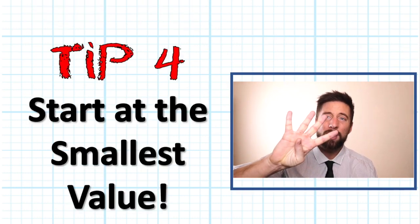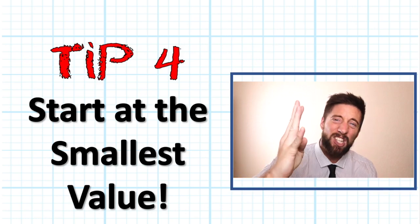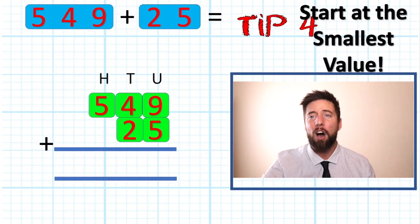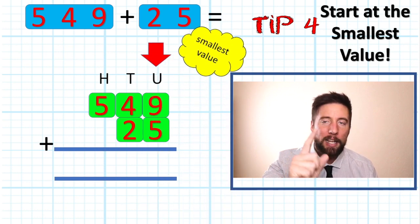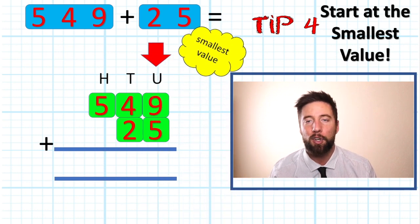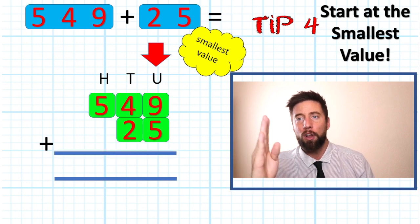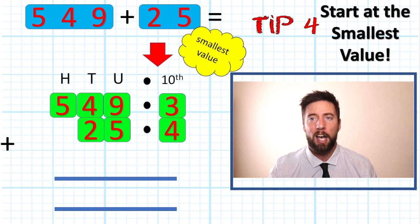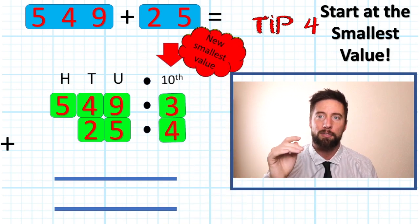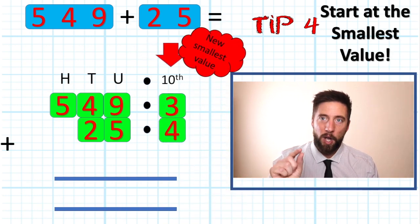Tip number four, it's not really a tip, this is an essential. We always start from our smallest value, not necessarily always our units. If we have got decimals, we will have smaller values down on the place value chart. So we always learn to start from our smallest value. That way, like in this question,